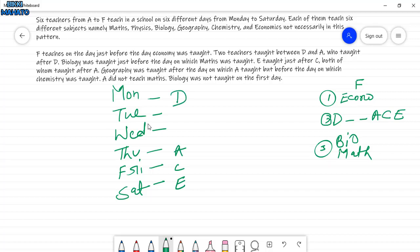And Monday will be D. Now subjects are missing. After this, what? Geography was taught after the day on which A taught, but before the day on which Chemistry was taught. Geography is taught after A but before Chemistry. Obviously C will teach Geography, and E will teach Chemistry.